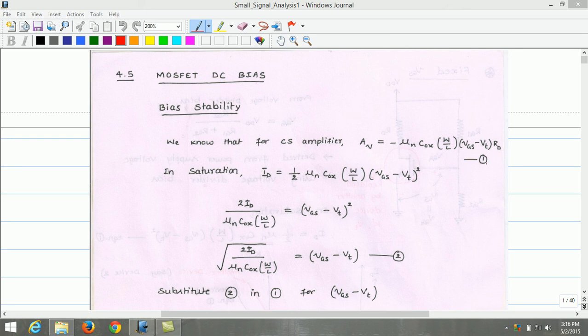Let us call this as equation 1. The saturation current equation is given by Id equals half of mu n COx times W by L into VGS minus VT whole square. From this Id equation, VGS minus VT whole square can be derived which is equal to 2 Id divided by mu n COx times W by L.